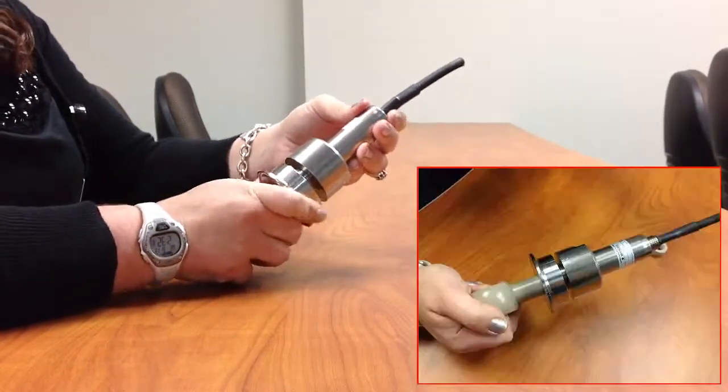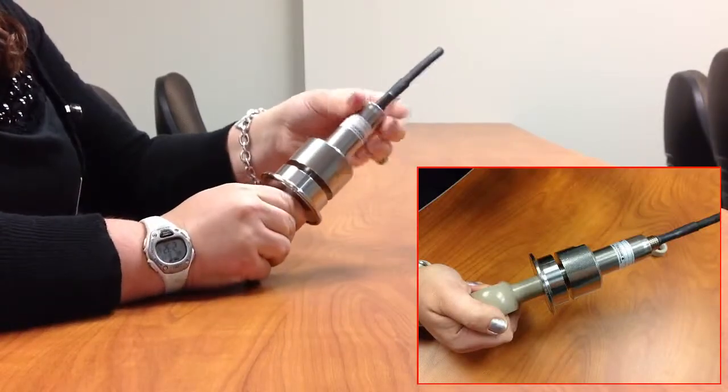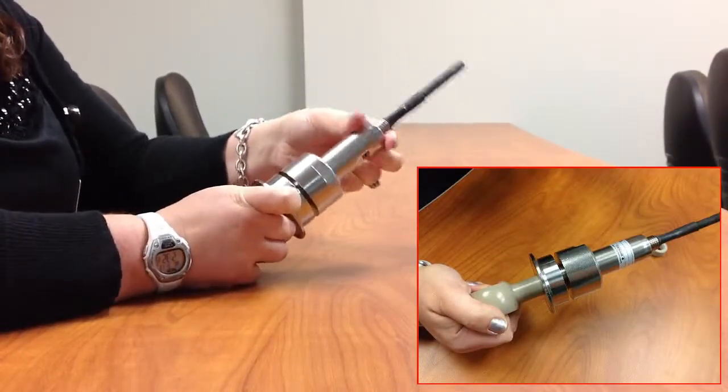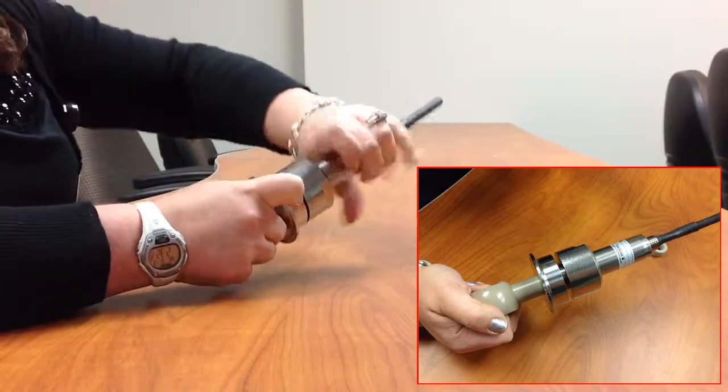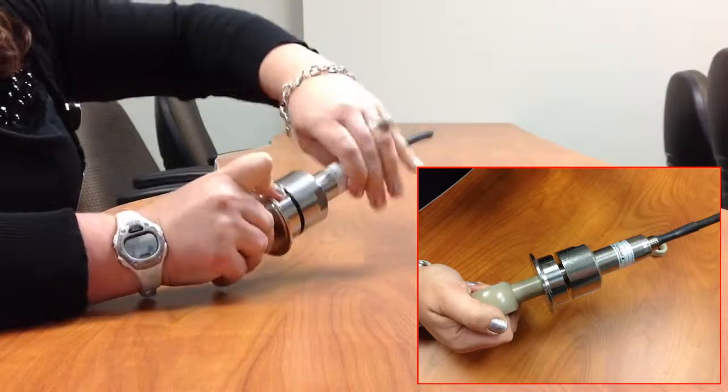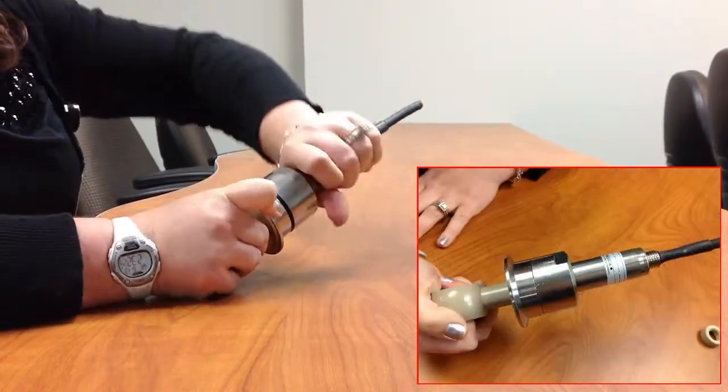The first step, you need to thread the back end of it in. And you know you've done it correctly because there should still be a gap between the top piece and the bottom piece when you do it.